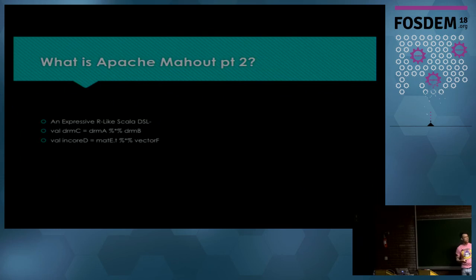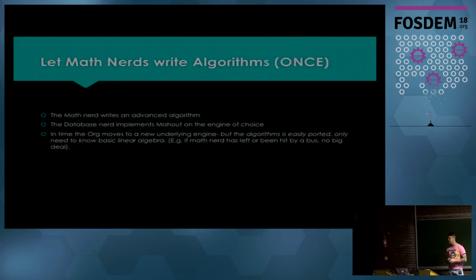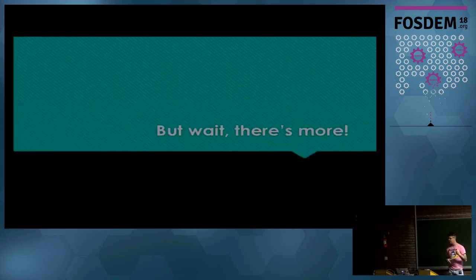Well, the upshot is if it's written in Mahout, all you're going to do is rewrite the back end and everything just picks up and lifts. You've changed your back end. There's a level of abstraction there. And you go to your next engine as time goes on. Math nerds write the algorithms once.